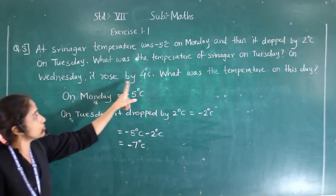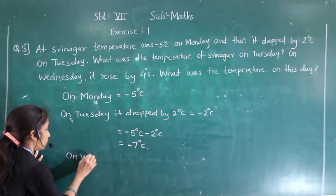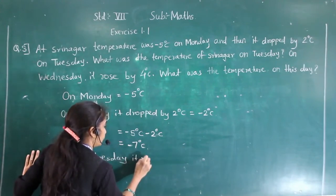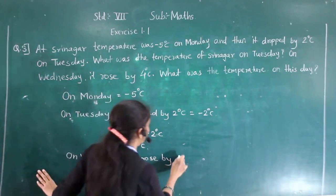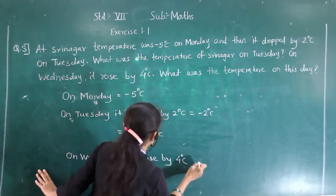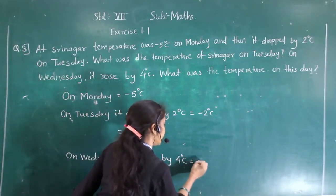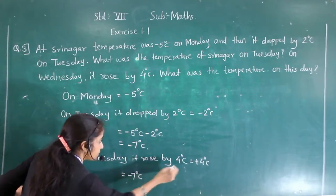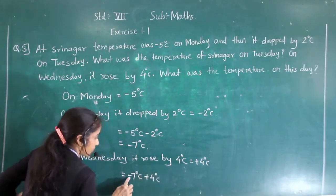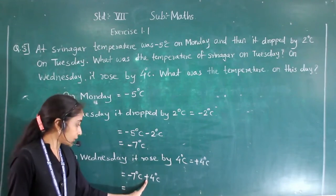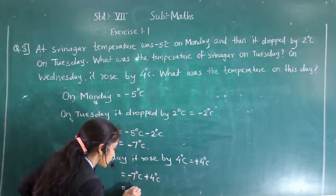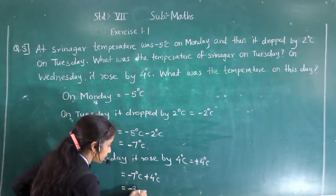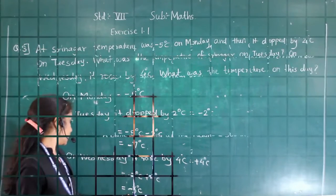Now on Wednesday, it rose by 4 degree Celsius. So plus 4 degree Celsius. So we do minus 7 plus 4. We subtract 4 from 7, giving 3, and the sign is negative. So the temperature on Wednesday is minus 3 degree Celsius.